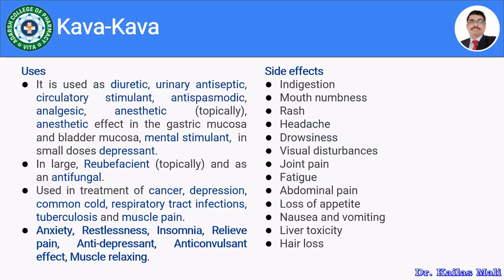Let us move towards the uses of kawakawa — for what purposes it is used in medicine. It is used as a diuretic, as a urinary antiseptic, as a circulatory stimulant, as an antispasmodic, as an analgesic, and both topically and internally as an anesthetic. It is a mental stimulant in large doses, and a depressant in small doses. In large quantities, topically, it acts as a rubefacient and as an antifungal.